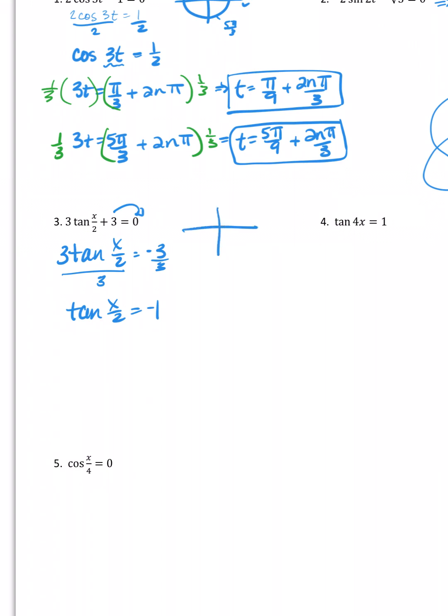All right, think about your unit circle. Where is tangent negative? In quadrant two and in quadrant four, tangent's negative. Where is it one? That would be the pi over four angle. So that would mean three pi over four, and then seven pi over four.